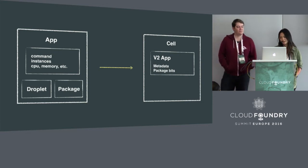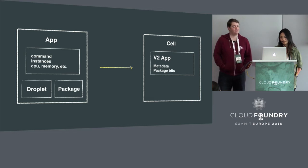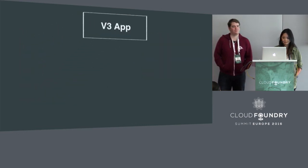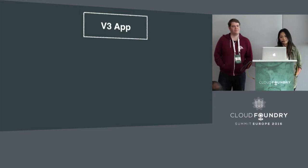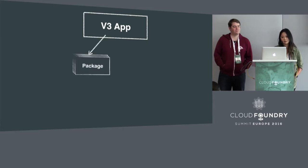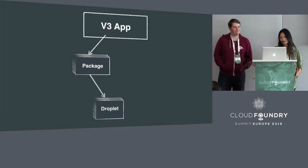It doesn't really allow for things we value, like flexibility of implementation or client-side manipulation. Our solution was to extract things like the droplet and package from a v2 app into top-level domain objects with their own API endpoints that all live under an umbrella v3 app. An umbrella v3 app can have many source code packages, and these packages can be staged into droplets, tarballs of compiled source code, or Docker images.